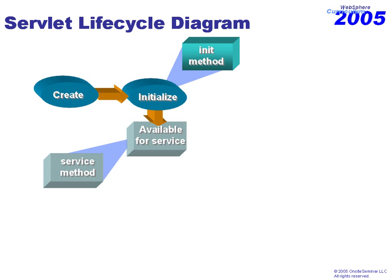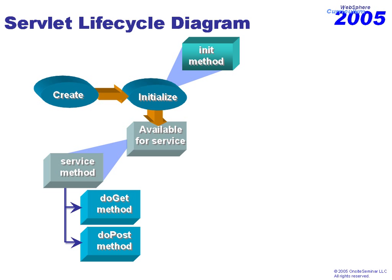The service method is now going to be invoked. The service method is inherited from our superclass, and unless it's been overridden, it will simply pass control into either a doGet or a doPost method. So inside my servlet I'm going to have one or both of those entry points — the doGet method for get processing and the doPost method for post processing. If I don't override the service method, the request is automatically filtered into one of these two entry points.